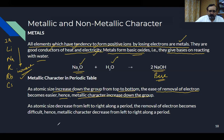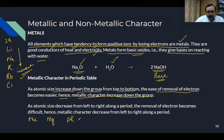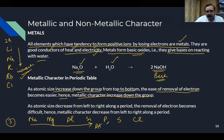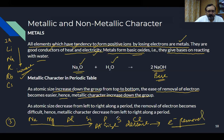But going left to right across a period — for example, lithium, beryllium, boron, aluminum, silicon, phosphorus, sulfur — the atomic size decreases. As atomic size decreases, the removal of electrons becomes more difficult, and therefore metallic character decreases from left to right across the period.